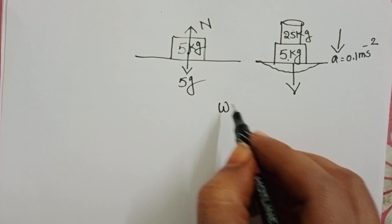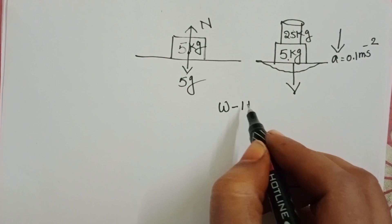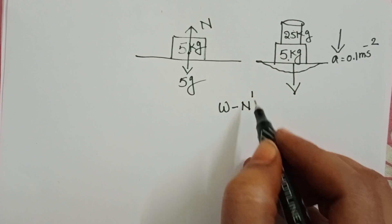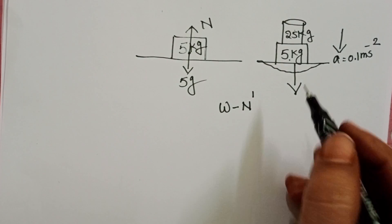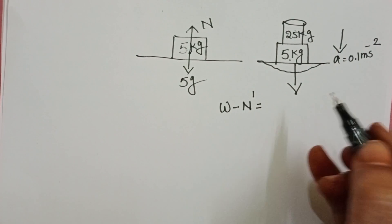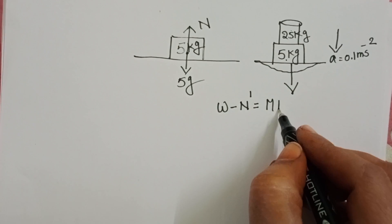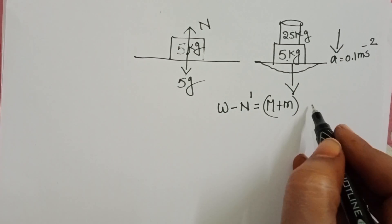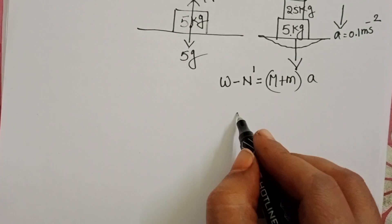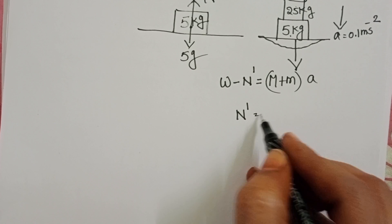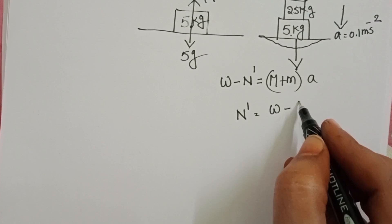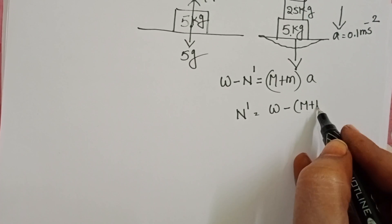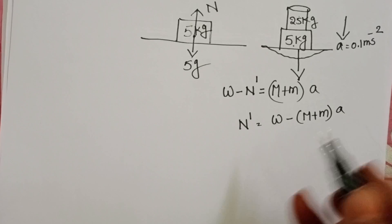Weight acts downward and normal reaction is not equal to the weight. Normal reaction N' equals total mass of the system into acceleration. N' equals weight of the system minus mass of the system into acceleration.